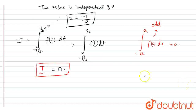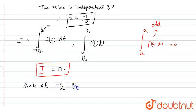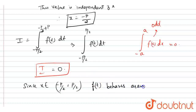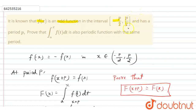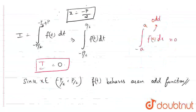Since x belongs to minus p by 2 comma p by 2, f of t behaves as an odd function at the interval from minus p by 2 to p by 2. Therefore, the integral equals zero, and it is proved. Thank you, students.